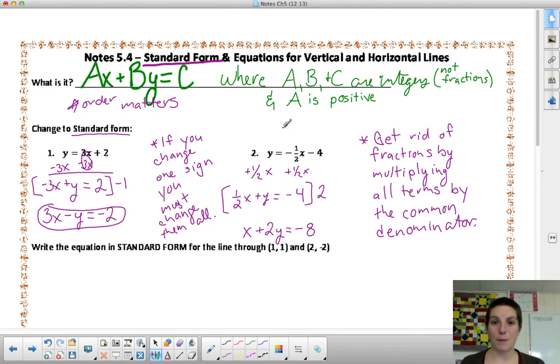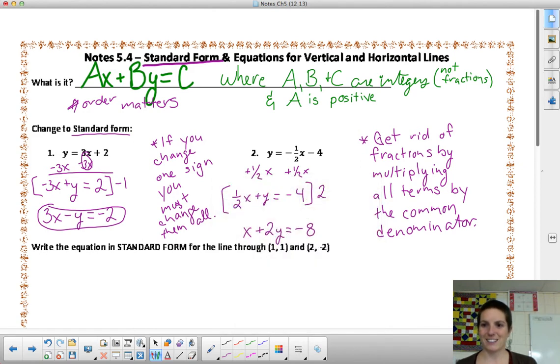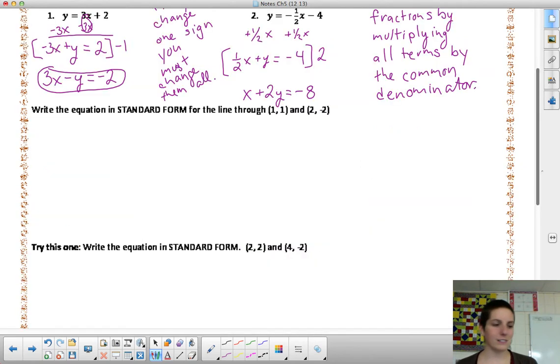Alright, the second type of problem that we're going to see are ones where we aren't just asked to change into standard form, but we're actually asked to write the equation in standard form. And, we're going to be given two points, just like we had been given before. So, when we look at these problems, we need to work all the way through everything that we've done so far. So, let's put a list of steps together. There are four steps to these problems.